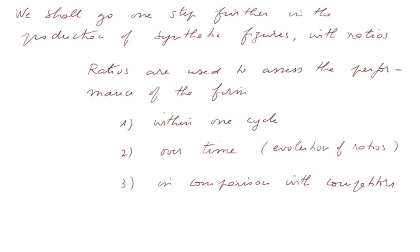We shall go one step further in the production of synthetic figures with their ratios. Ratios are used to assess the performance of the firm in three different contexts. First of all, within one cycle. Secondly, over time, within the figures of the firm. We shall see the evolution over time of the ratios of the firm. And thirdly, in comparison with competitors in the same economic sector.